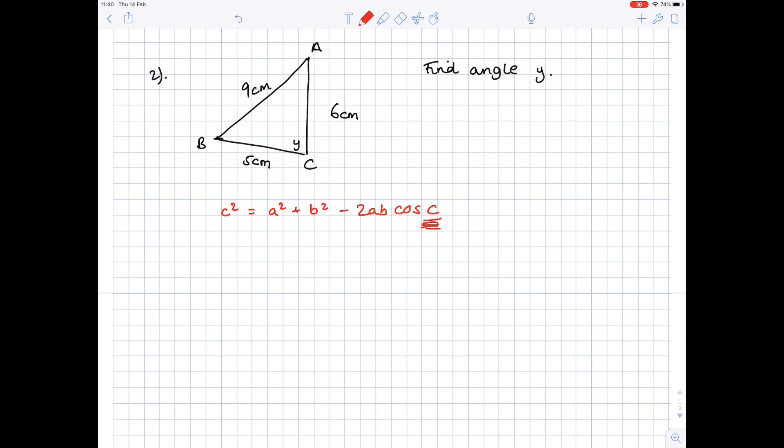If we are to label the sides, we know that the side opposite angle C will be C. Side opposite angle A will be A. Side opposite angle B will be B. Now, we're ready to substitute in our values. C squared, we know side C is 9, so we're going to do 9² equals A² which is 5² plus B² which is 6², minus 2 times 5 times 6 times cos C, which is what we're after.